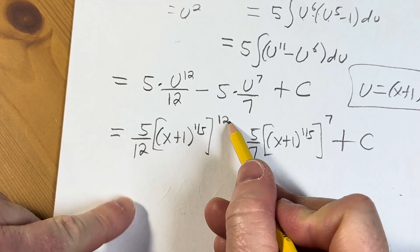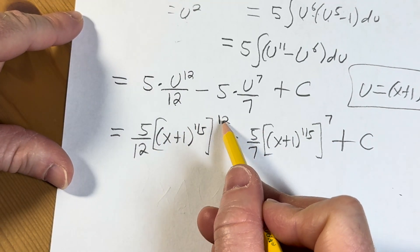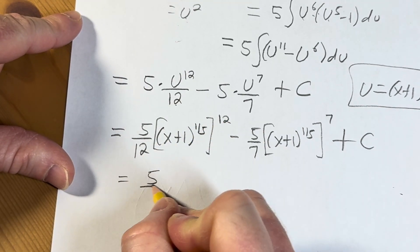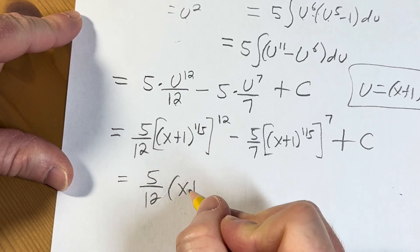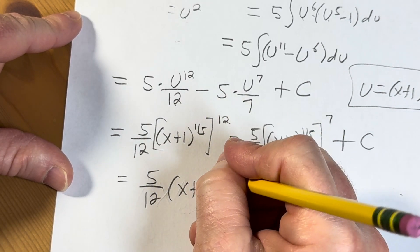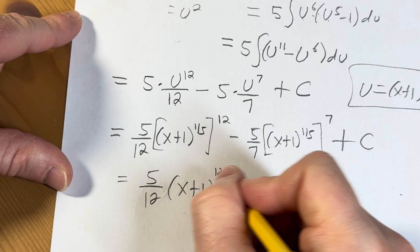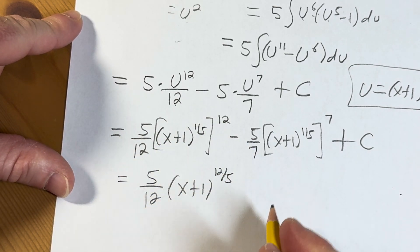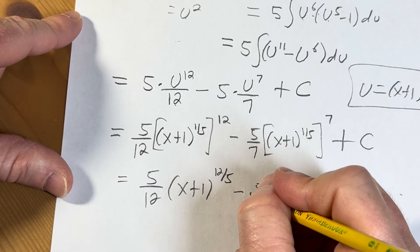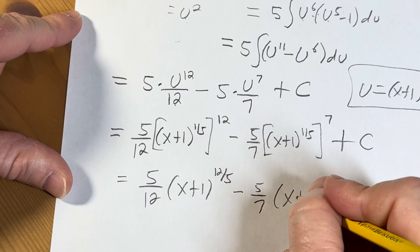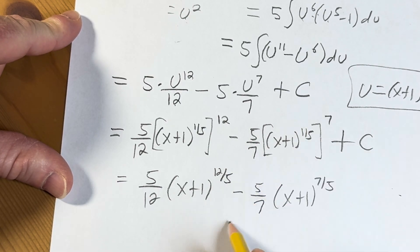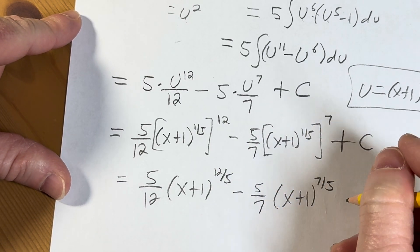So now we're going to multiply using properties of exponents. So we have 12 times 1 5th. This will be 5 12ths times x plus 1 to the 12 5ths, kind of a fun little symmetry here. Minus 5 7ths times x plus 1 to the 7 5ths. Again, kind of a fun little relationship there. Plus c.